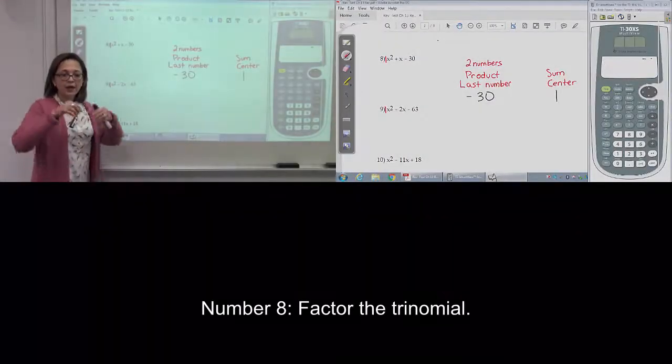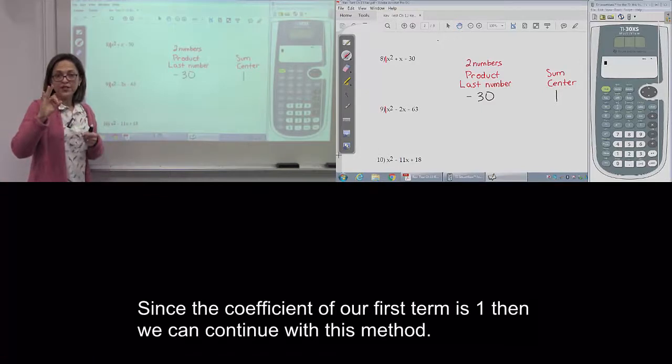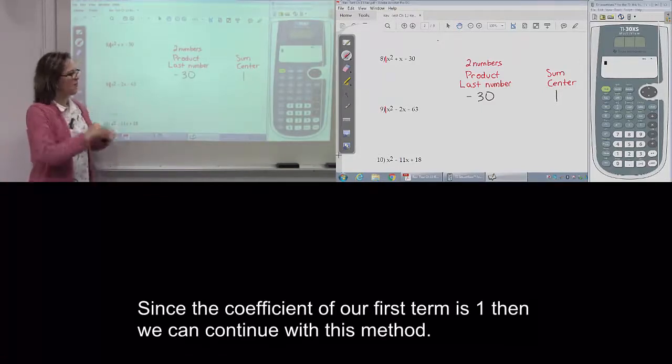Number 8. Factor the trinomial. Because the coefficient of x squared is 1, we can continue with this method.